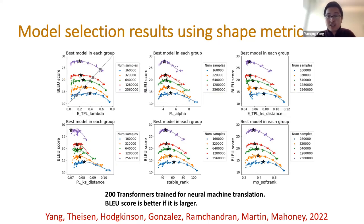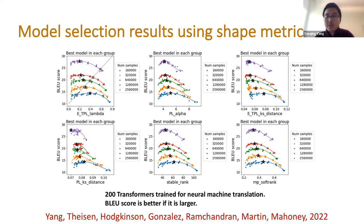Using the results of this fitting, you can measure the shape of these spectral densities in different ways. We call these generalization measures the shape metrics. We show results on model selection using shape metrics across six different shape metrics — none of which need access to training or testing data. We have 200 transformers for machine translation trained with different hyperparameters, grouped by amount of data. We select the best model inside each group, mimicking common hyperparameter tuning, and measure whether shape metrics can rank the optimally trained models.